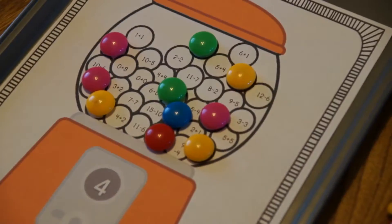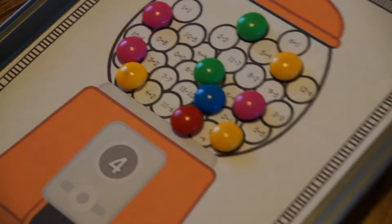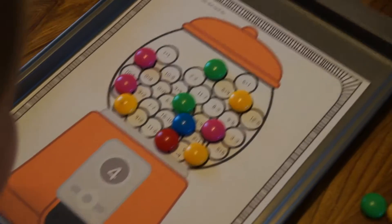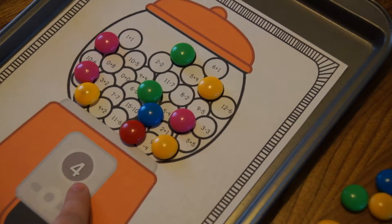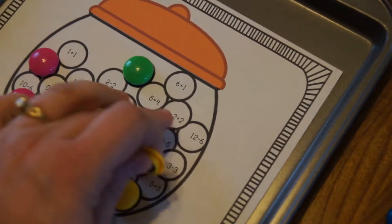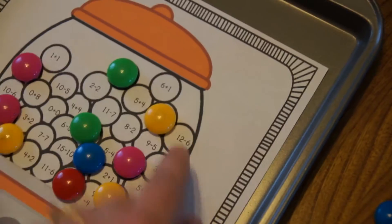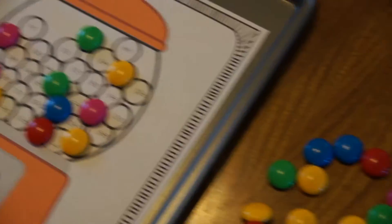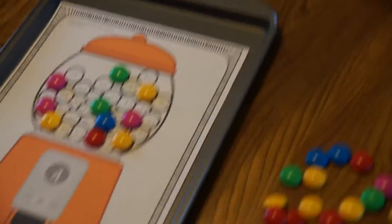Children are going to solve the equations to know which ones have to be covered. For example, this worksheet, they were trying to get to the answer of 4. So, 2 plus 2 is 4. So you cover it with a magnet. And again, they stay nicely in place so there's no frustration if the magnets move.